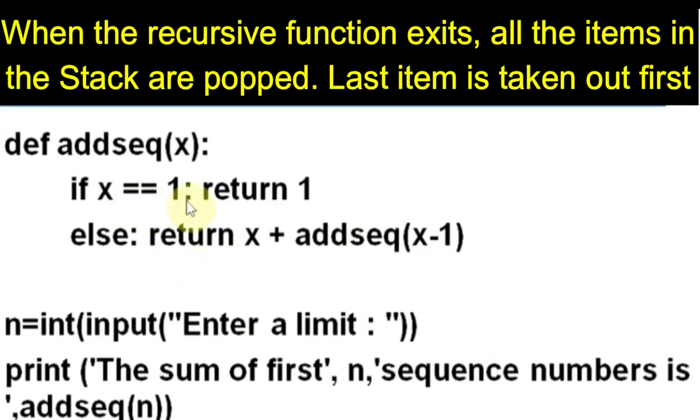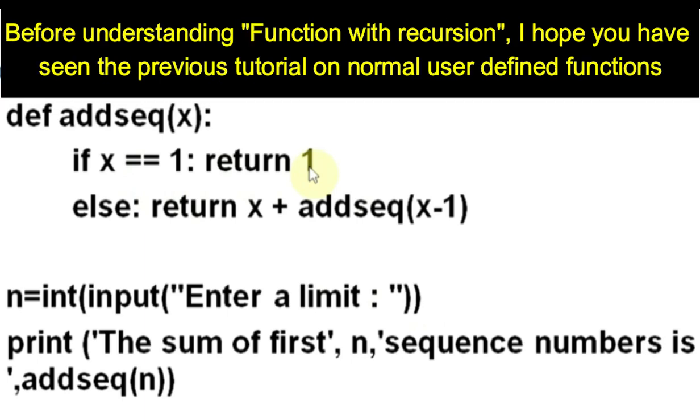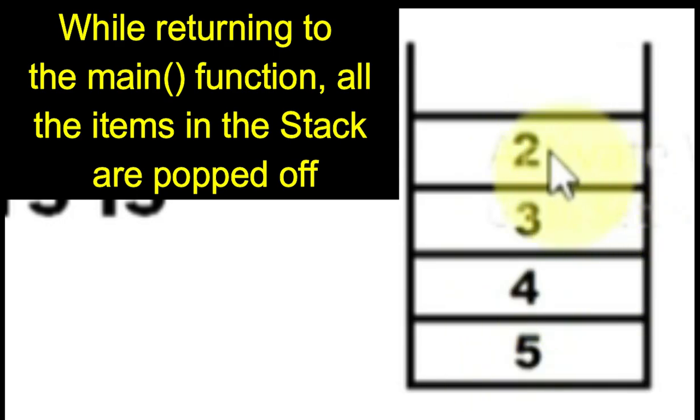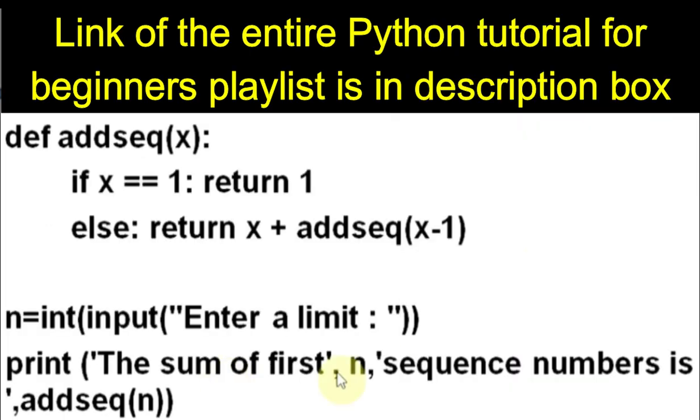And finally, when the value of x is 1, it will go back to the main function, but the compiler will pop all the values from the stack and will add with the value 1. So, all these values will be added with the value 1 and the total will be displayed here.